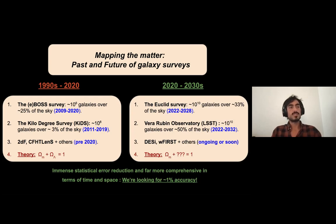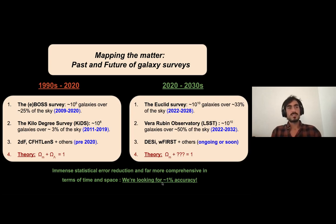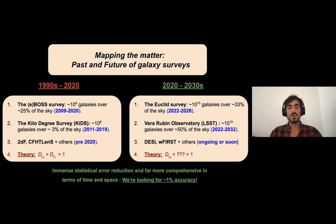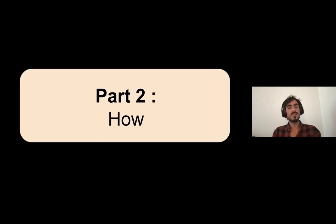Over the next 10 years there will be an immense statistical error reduction, with far more comprehensive coverage in time and space — a larger sky fraction and far superior redshift range. The problem is that if you decrease your statistical errors, you want your theoretical modeling to follow. If you have inaccurate theoretical models applied to super-accurate data, you're going to get the wrong interpretation and the wrong picture of nature. That's the challenge: to get a theoretical model which can match the upcoming data quality.